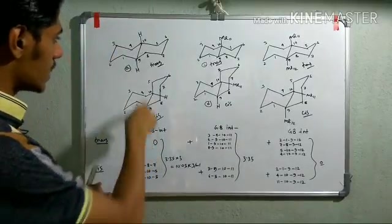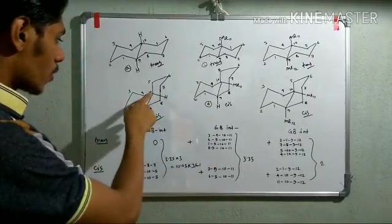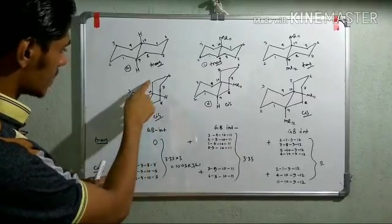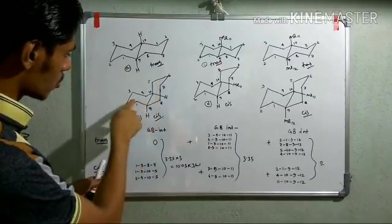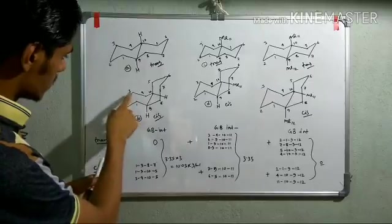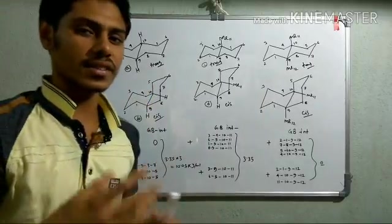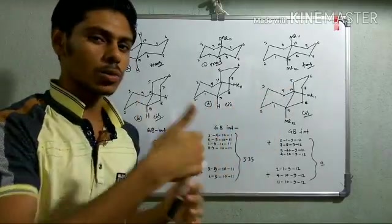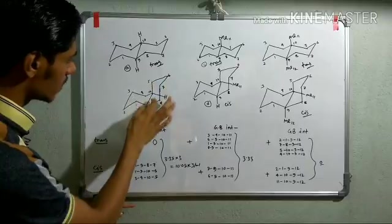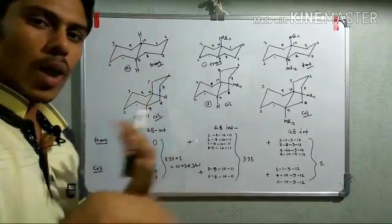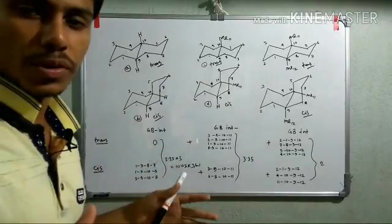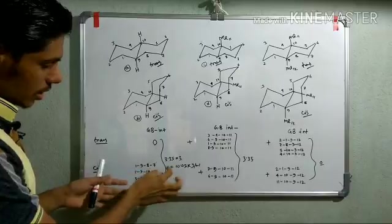Now if we count the gauche-butane interactions for unsubstituted normal cis and trans decaline, we find that for trans decaline there is no gauche-butane interaction. But for cis decaline there are three gauche-butane interactions: namely 1-9-8-7, 1-9-10-5, and 3-9-10-5. This gauche-butane interaction arises when in a cyclohexane chair form there is an axial group. For this particular cyclohexane ring this group is axial, and for the other cyclohexane ring there is one axial group, so due to these two axial configurations three gauche-butane interactions arise. For trans decaline all groups are equatorial, so there is no gauche-butane interaction.